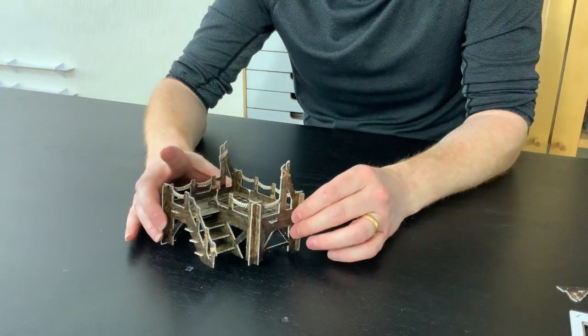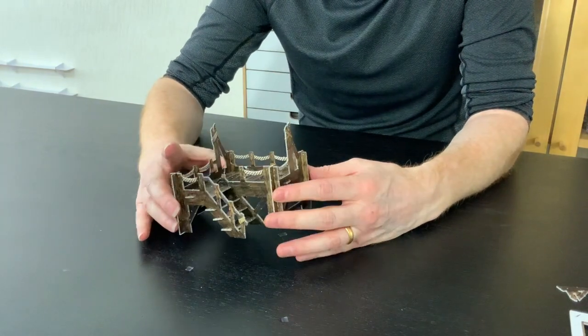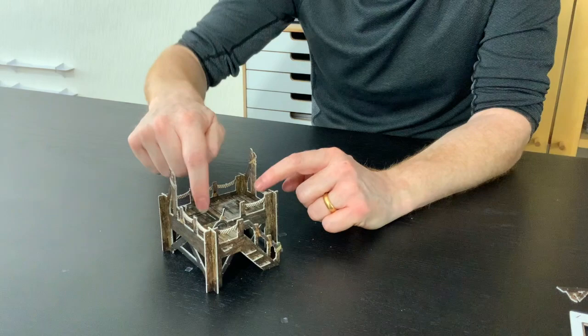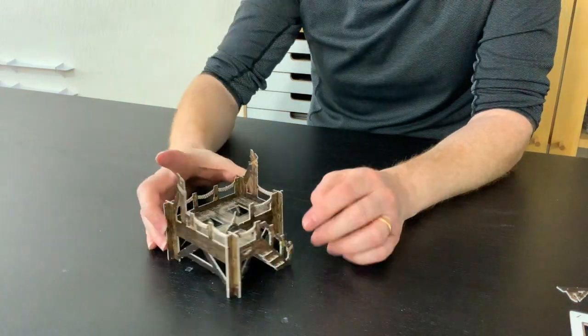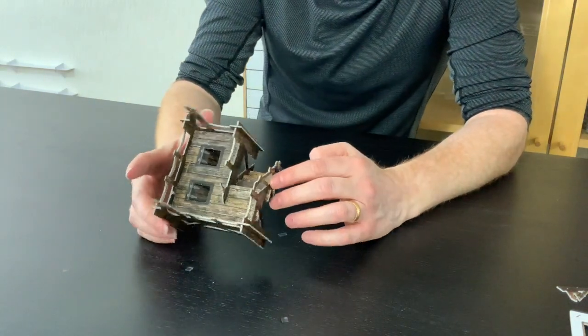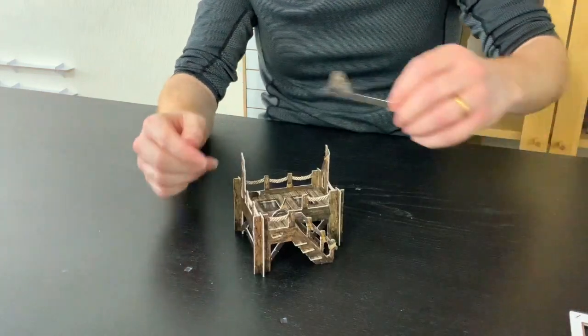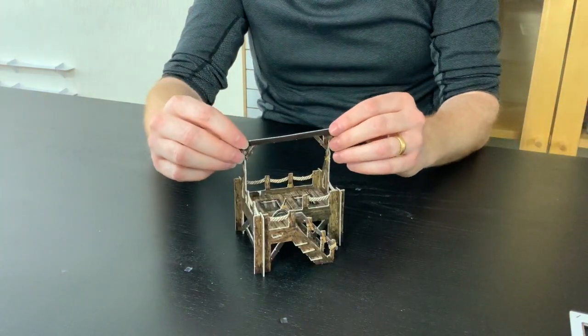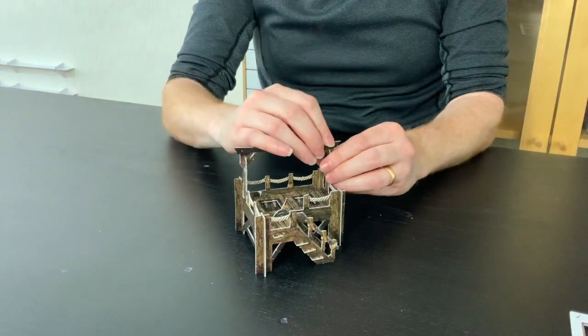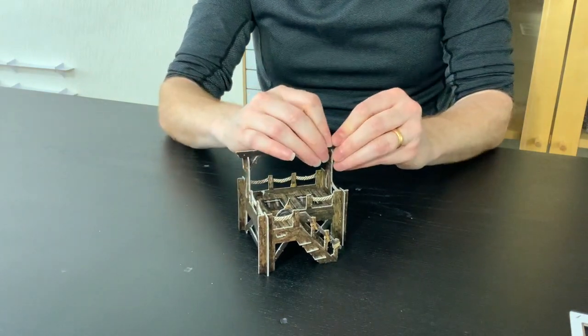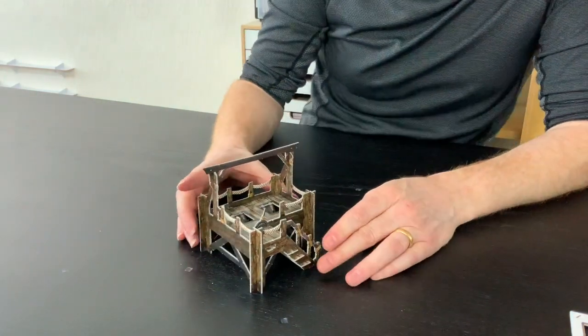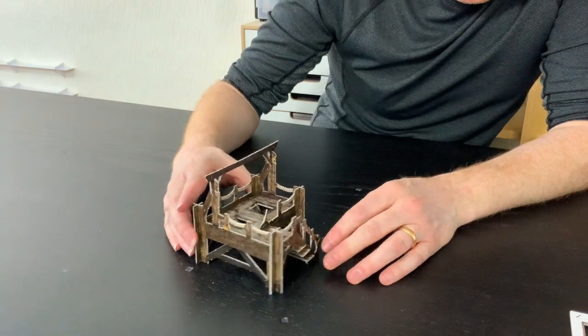And once those steps are in, they basically hold the whole structure together. That's really, really nice, and you've got your two little trap door hatches here. Lastly then, we're going to pop that across the top of here, and again this will just help keep everything together. We've got that there.